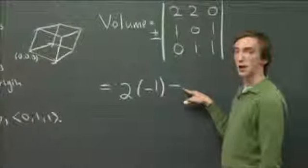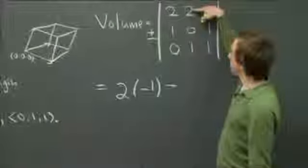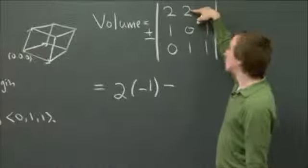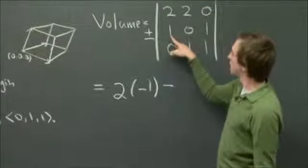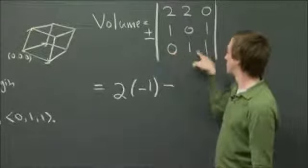And now we need to subtract the next entry in the row times its minor, which is now this matrix: 1, 1, 0, 1.